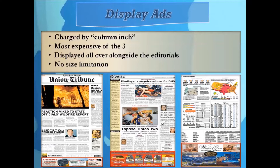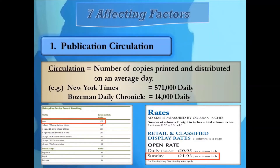Before examining ad rates from different publishers, we need to understand that the cost of advertising depends on several factors. First, publication circulation: the newspaper circulation is the number of copies printed and distributed on an average day. The New York Times has a daily circulation of 571,000 copies, while the Bozeman Daily Chronicle in Montana has 14,000. The more audience you can reach, the more authority and the more expensive — the New York Times charges $279 per column inch, while Bozeman Daily Chronicle charges $22 per column inch.